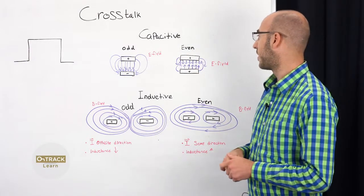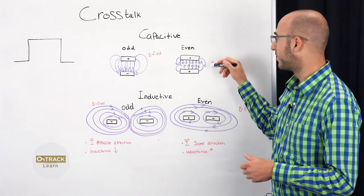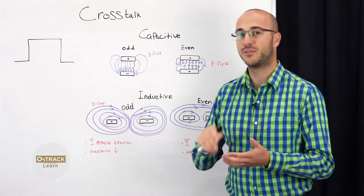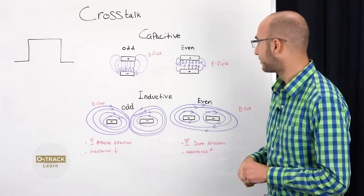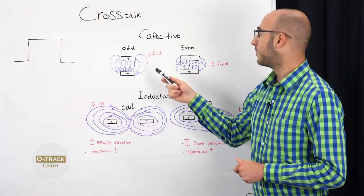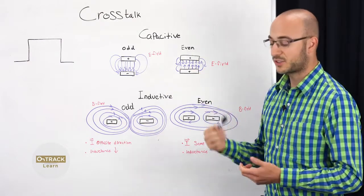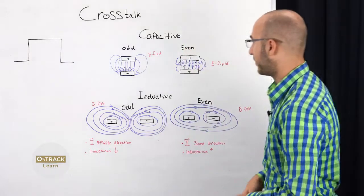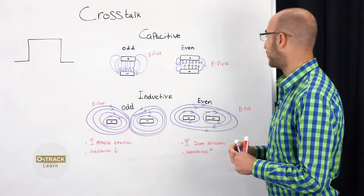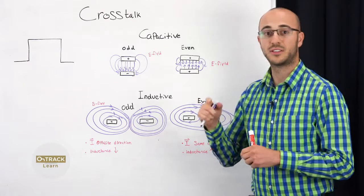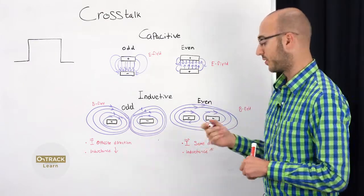Even is the other way around. These are at very similar potentials, so the capacitance is much less. Now, a solution for this, if this happens in your design, is to have the traces on separate layers run orthogonal to each other.